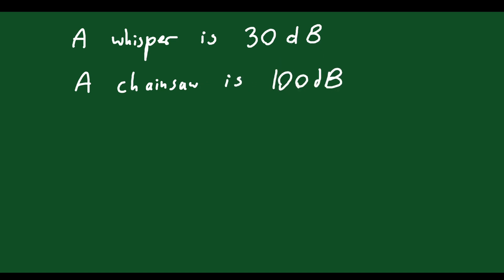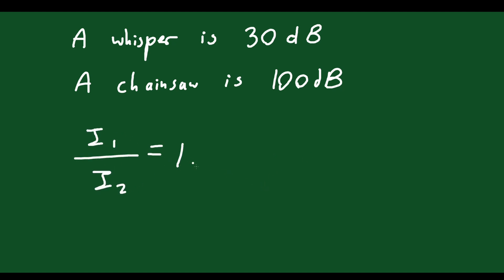You might guess a chainsaw is about three times louder than a whisper, but that doesn't make sense when you think about how quiet a whisper is versus how loud a chainsaw is. Because this is on the decibel scale, 100 decibels actually represents a massive increase over 30. Every time you go up one bell, you're increasing by 10. For decibels, I1 over I2 equals 10 to the exponent of 100 minus 30 divided by 10 — which gives 10 to the exponent 7.